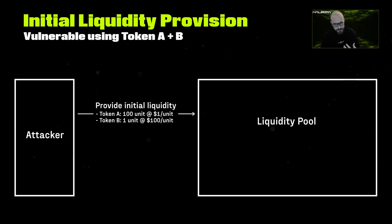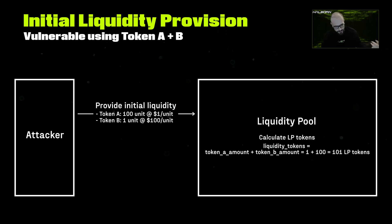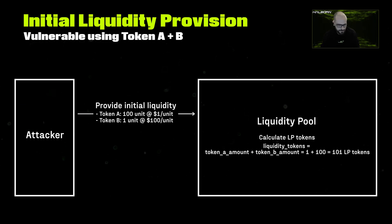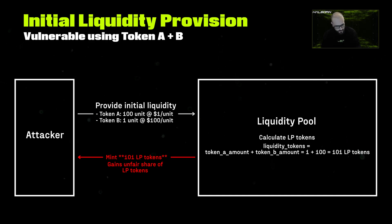Imagine a scenario where people can contribute two different types of tokens to a shared pool, and in return they receive tokens that represent their share of the pool — we can call them LP tokens. The issue is that the system calculates how many pool tokens to give by simply adding up the amounts of the two tokens contributed: token A amount plus token B amount. This method doesn't consider the actual value of each token, neither the decimal units for each token. If one token is worth much less than the other, someone could contribute a large amount of the cheaper token and get more LP tokens than they deserve, which isn't fair to the other participants or the protocol itself.